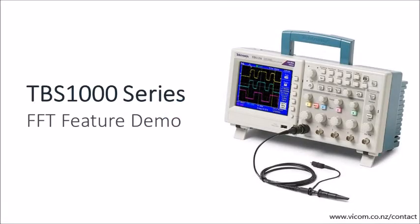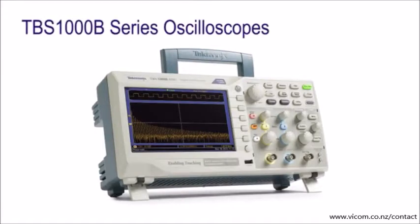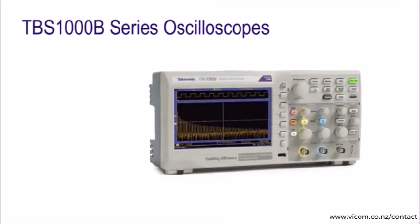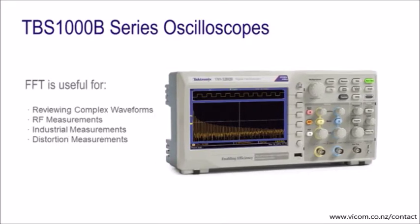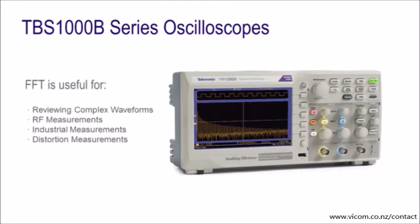The TBS-1000B instruments offer a built-in FFT that can help you see the frequency content in your signals. The Fast Fourier Transform is an algorithm used to transform time domain information into frequency domain information. You can use the FFT operation on an oscilloscope to view and measure repeating complex waves as sine wave components.